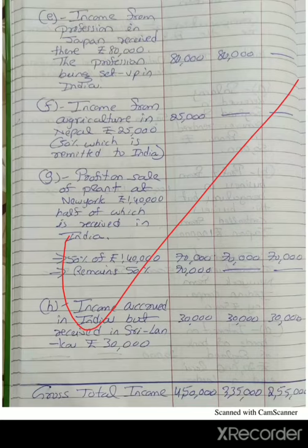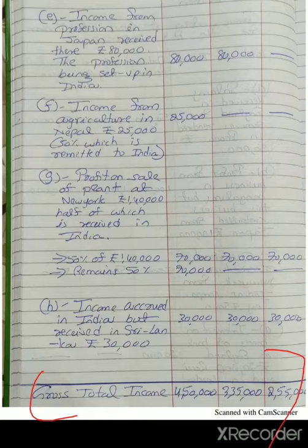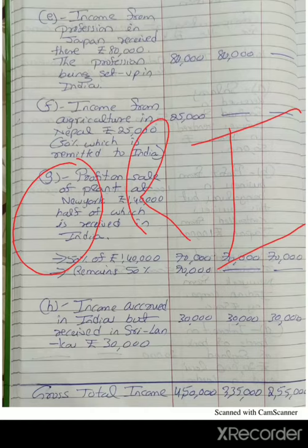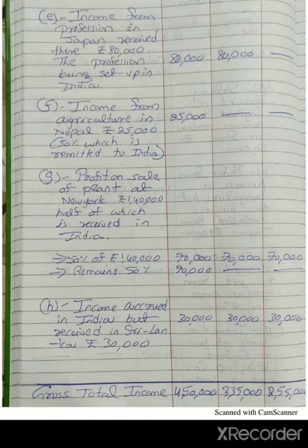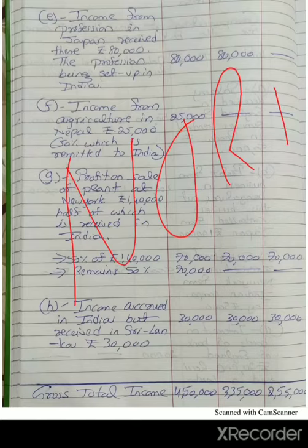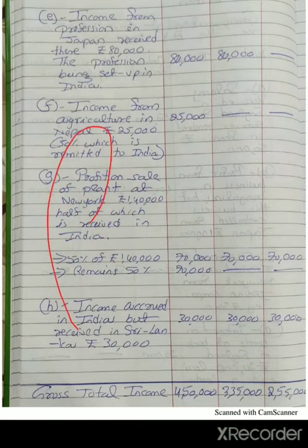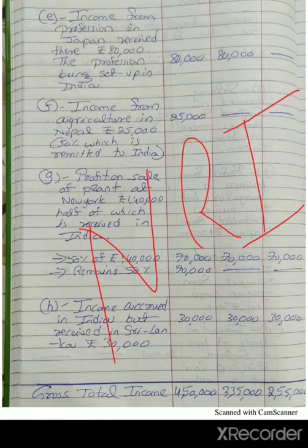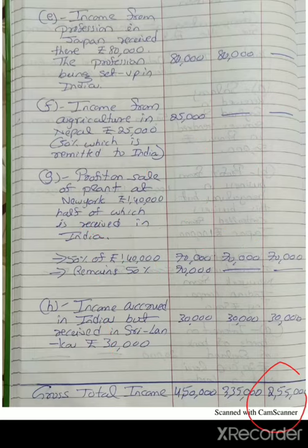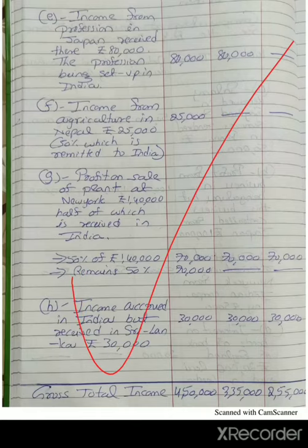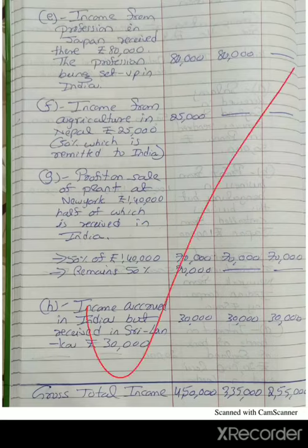After all these calculations, we aggregate the amounts. This aggregate amount is called the gross total income. If the assessee is an ordinary resident in India, then his gross total income is Rs. 4,50,000. If the assessee is a not ordinary resident in India, then his taxable income is Rs. 3,35,000. If he is a non-resident in India, then his gross total income is Rs. 2,55,000. This is the solution for the 2015 question paper. Thank you for watching.